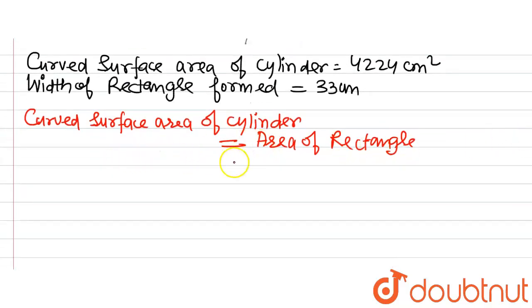First of all we will find out the length of the rectangle. For that we will equate curved surface area of the cylinder which is 4224 and area of rectangle. We know the area of rectangle is length multiplied by breadth.